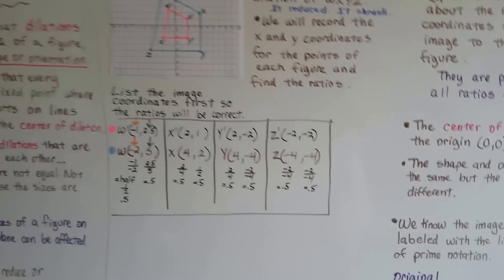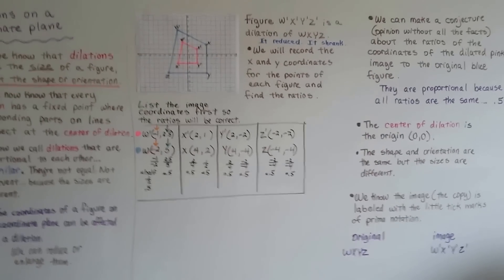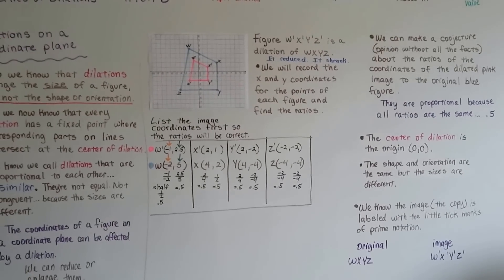So those are dilations on a coordinate plane, and that's how we can find out if they're proportional, in proportion to each other.